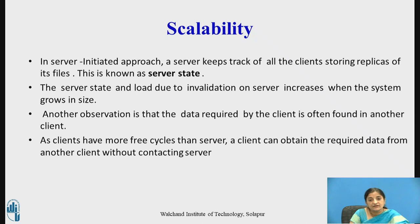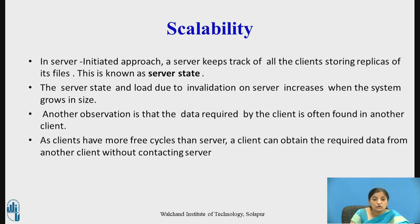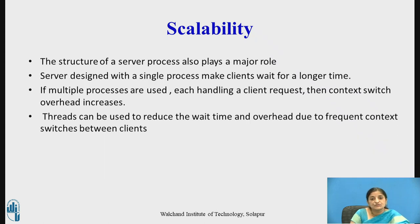Another observation is that data required by a client is often found in another client. Since clients have more free cycles compared to the server, a client can obtain the required data from another client without contacting the server at all, reducing the load on the server. However, a mechanism is needed to track on which machines the data required by the client is present.